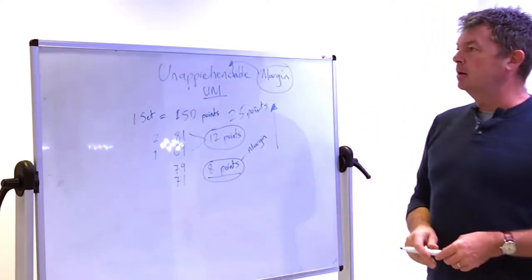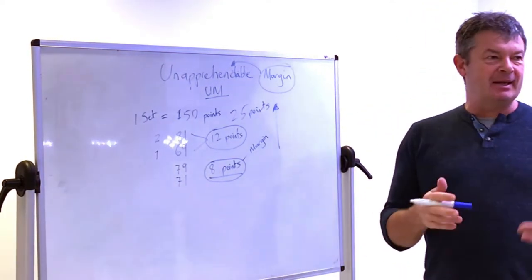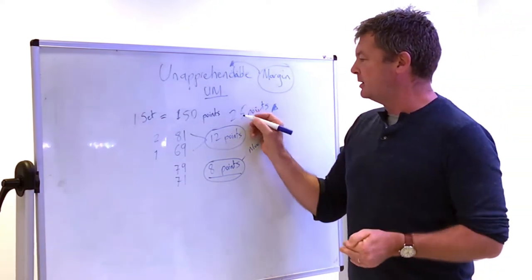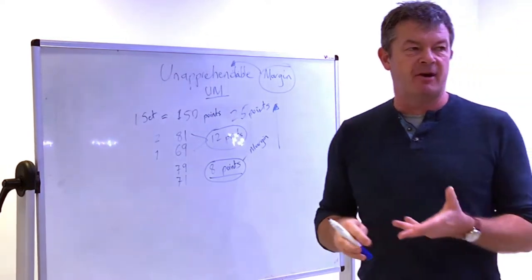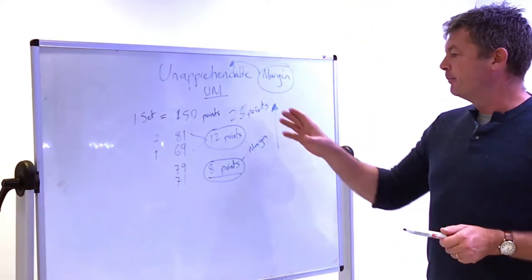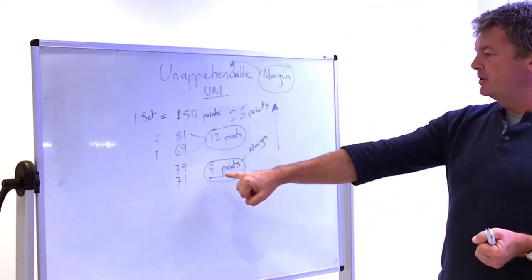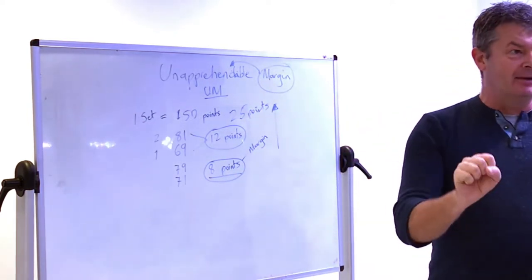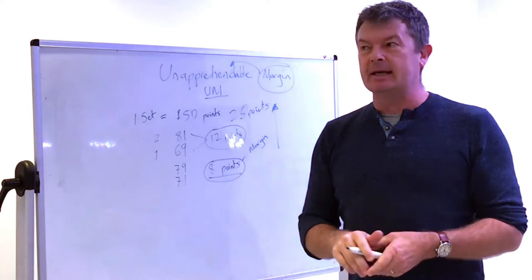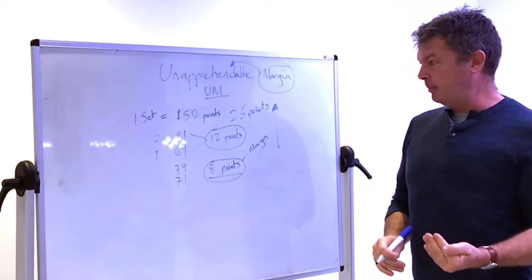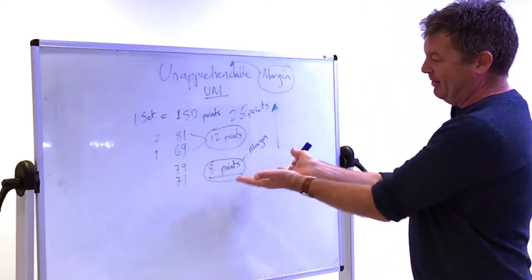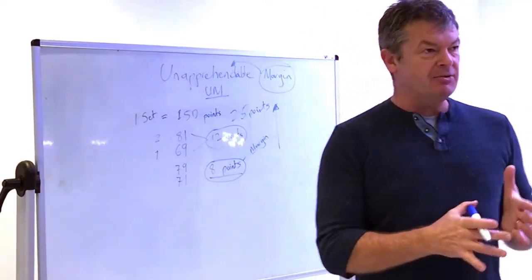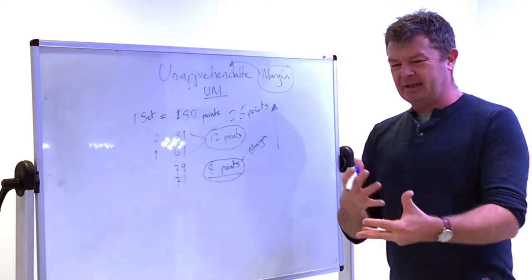On the flip side, when players win, they'll say well, I probably got 20 points more than him in the set. But it's much more likely eight. So that's the margin part. The unapprehensible part, this is where it's speculative.